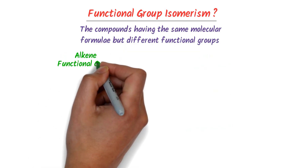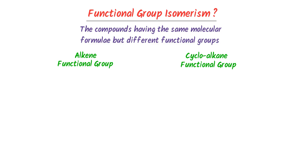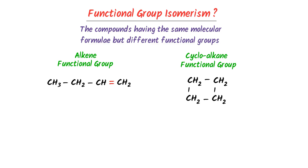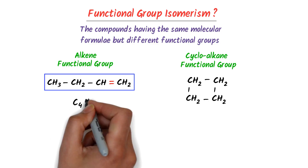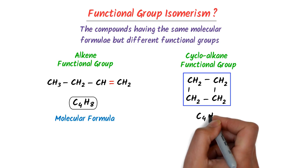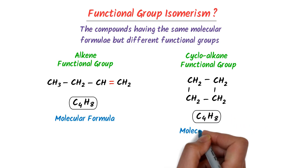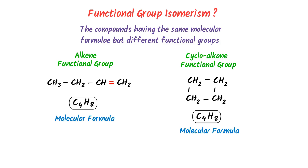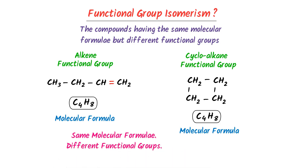Lastly, consider the functional group of alkene and cycloalkane. For example, consider this alkene and this cycloalkane. In the alkene molecule, there are four atoms of carbon and eight atoms of hydrogen, so the molecular formula is C4H8. In the cycloalkane, there are also four atoms of carbon and eight atoms of hydrogen, so the molecular formula is also C4H8. Hence, they both have the same molecular formula but different functional groups. Therefore, we say that they both are functional isomers.